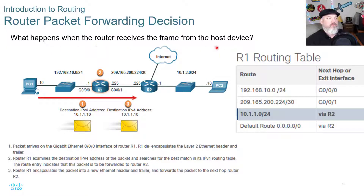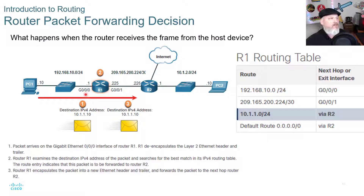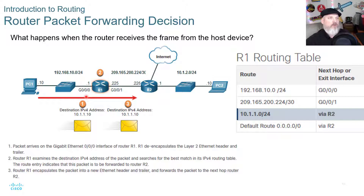Introduction to routing — the router packet forwarding decision. When a router receives a frame from a host device, the packet arrives on GigabitEthernet 0/0/0 of router R1. R1 de-encapsulates the Layer 2 Ethernet header and trailer, then examines the destination IPv4 address and searches for the best match in its routing table. The route entry indicates the packet is to be forwarded to R2. R1 re-encapsulates the packet into a new Ethernet header and trailer and forwards it to R2, where the process starts again. We can see the route goes out G0/0/1 via R2.